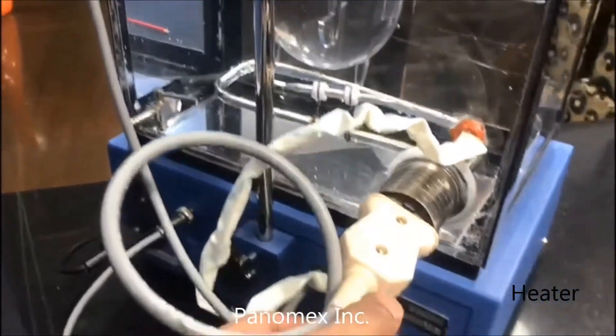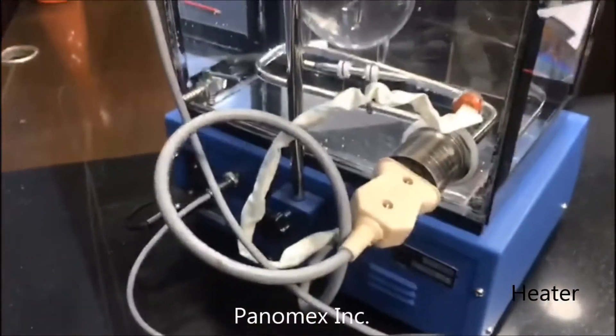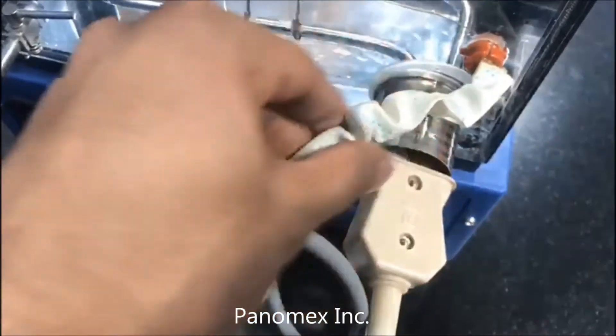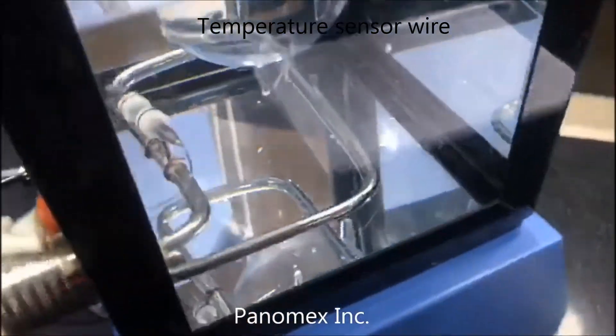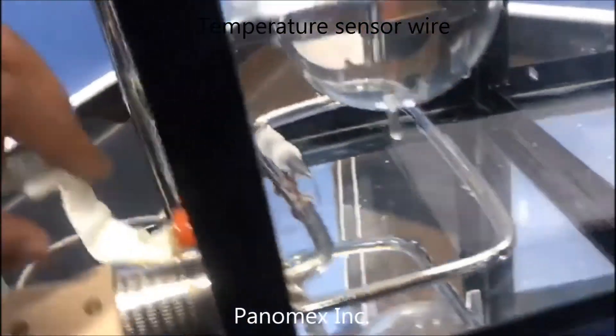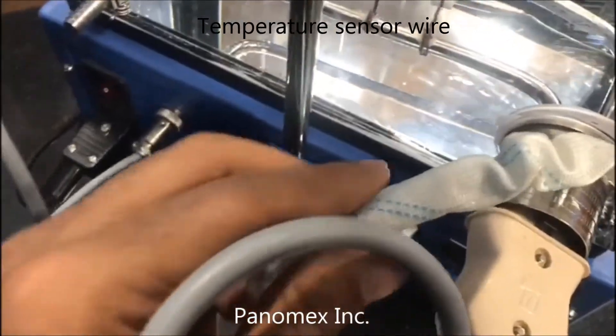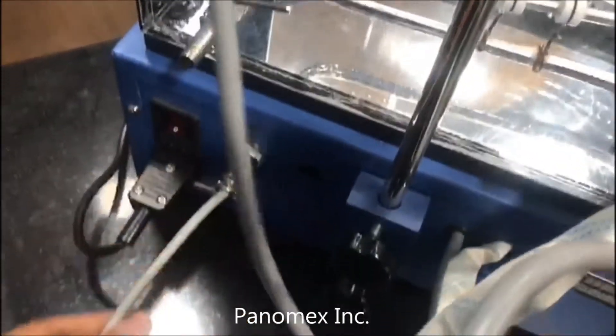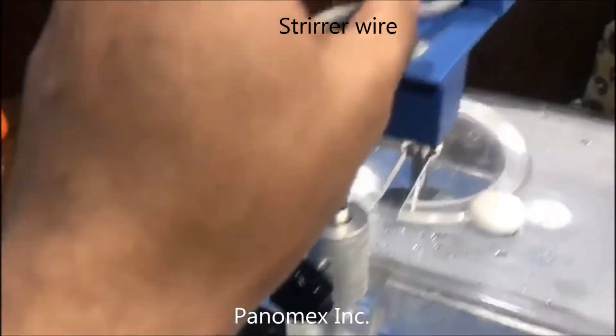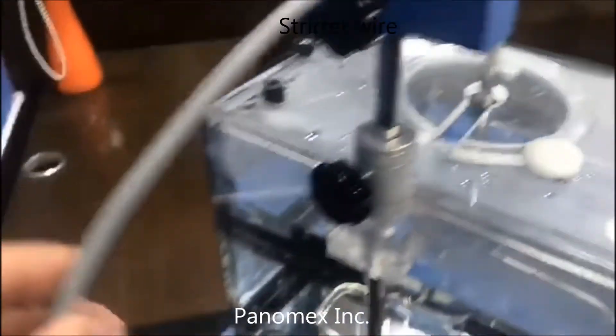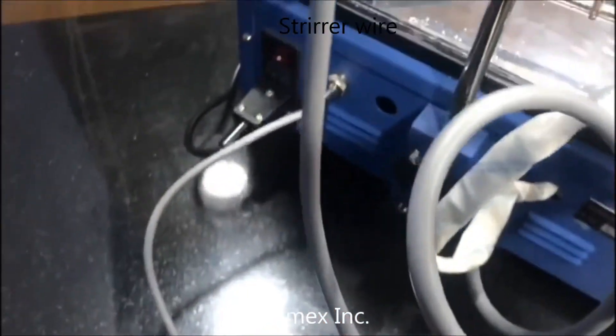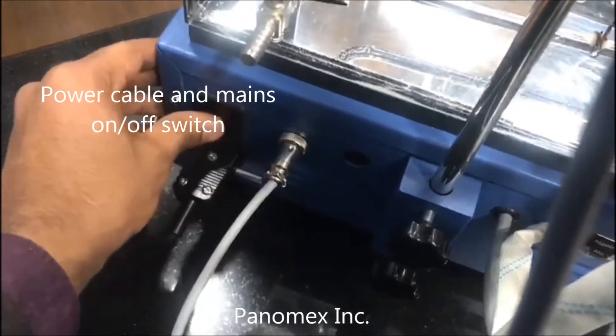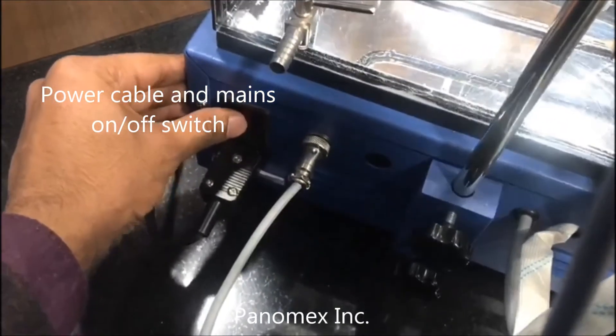This is for the heating. This is the temperature sensor. As you can see, it is going inside and showing here, so the temperature sensor is connected. This is for the stirring. This is for the power, and this is the mains on and off.